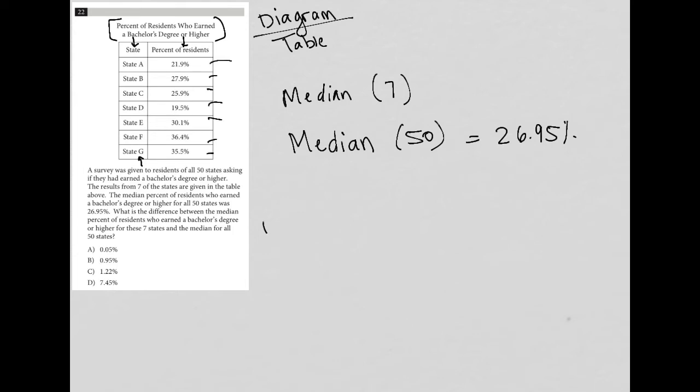I'll just do that down here. So 19.5 and then 21.9, followed by 25.9, followed by 27.9, and 30.1, and then 35.5, and lastly 36.4. If I want to find the middle term, I'm just going to cross out from the edges here until we identify the middle value. That middle value is 27.9.